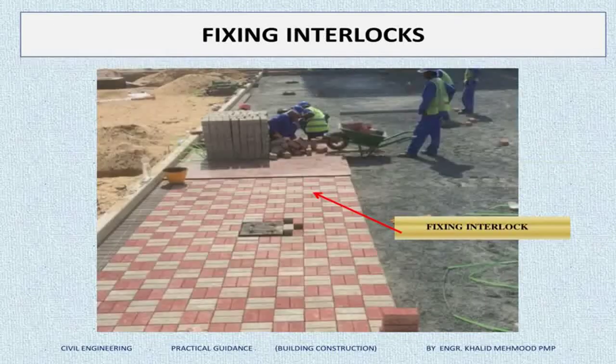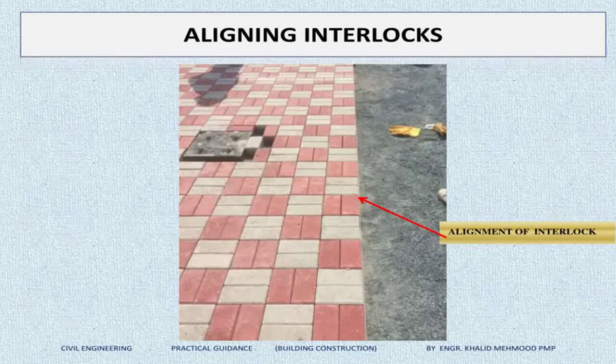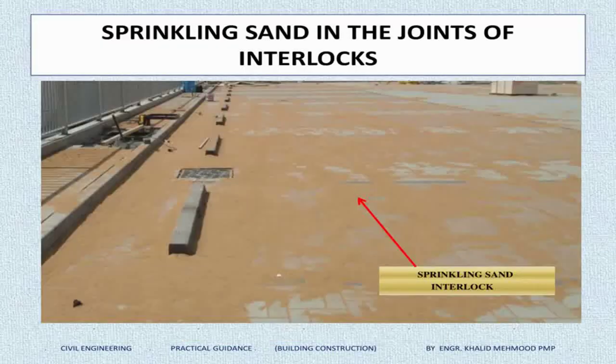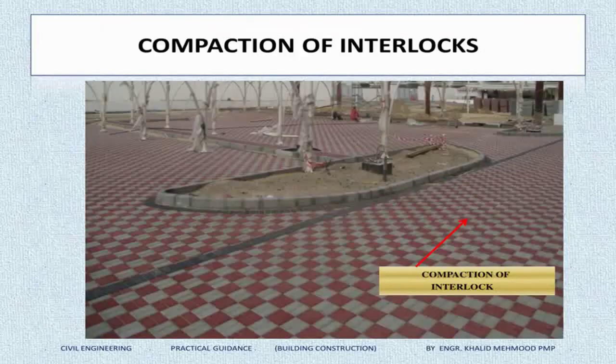Here you can see we are fixing the curbstones line by line with proper alignment. The interlocks are also well aligned. After fixing the interlocks, we spread sand on them. This sand fills inside the joints between the interlocks to connect them all together.